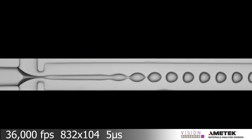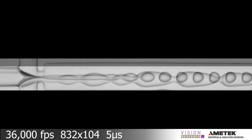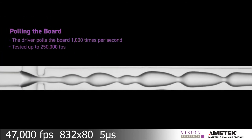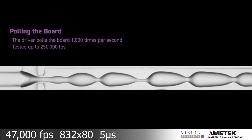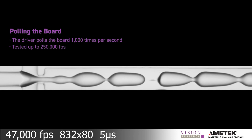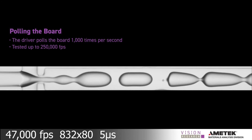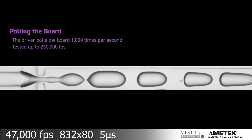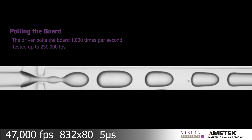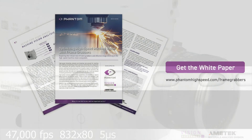Another solution involves turning the system interrupts off and polling the board for a reading of how many new frames have come in. To learn more about frame grabbers' role in machine vision, download our white paper.